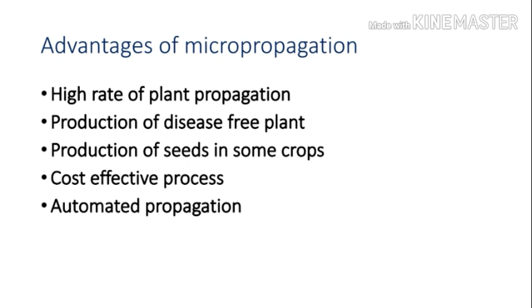The fifth point is automated propagation. It has now become possible to automate micropropagation in various industries. Bioreactors have been set up for large-scale multiplication of shoots and bulbs. Some workers employ robots in place of laborers for micropropagation, which further reduces the production cost of plants. So these are the advantage points of micropropagation: high rate of plant propagation, production of disease-free plants, production of seeds in some crops, cost-effective process, and automated propagation.